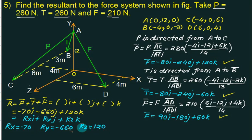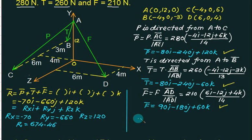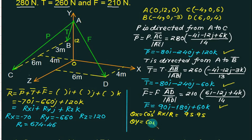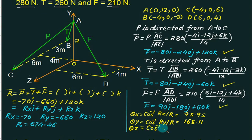Once we know Rx, Ry, and Rz, we square them, add them, and take the square root to get the magnitude of R. Then we find the direction cosines: θx = cos⁻¹(Rx/R) ≈ 95.95°, θy = cos⁻¹(Ry/R) = cos⁻¹(−660/674) ≈ 168.11°, and θz = cos⁻¹(Rz/R) = cos⁻¹(120/674) ≈ 79.75°.